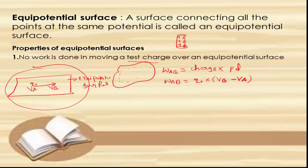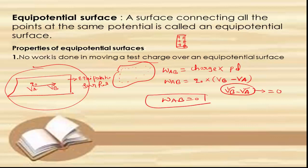Since the surface has the same electric potential at all points, φ_B minus φ_A equals zero. Therefore zero multiplied by q₀ is zero, and the work done from A to B equals zero. This confirms that no work is done in moving a test charge over an equipotential surface — this is the first property.